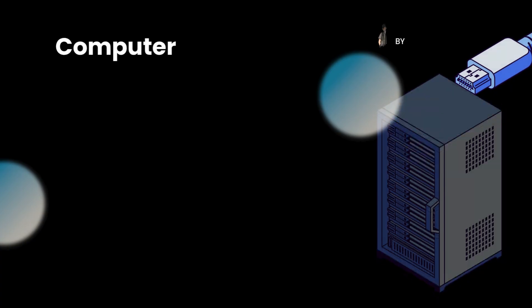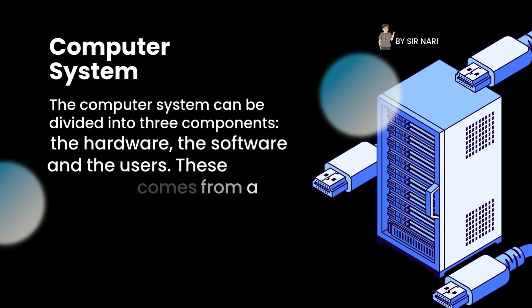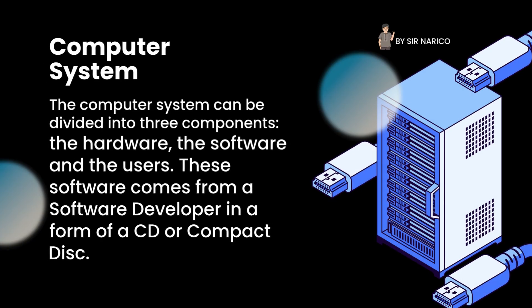The computer system can be divided into three components: the hardware, the software, and the users.